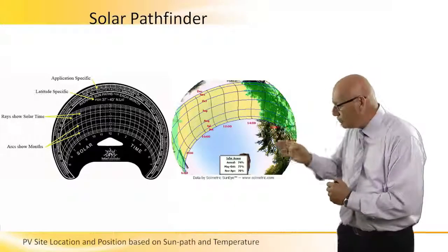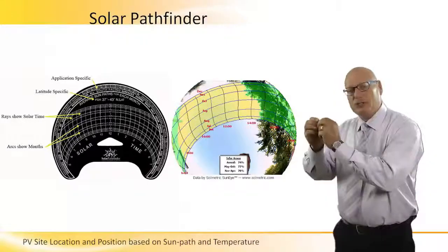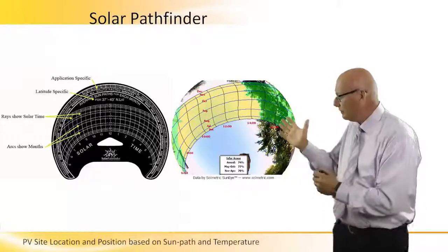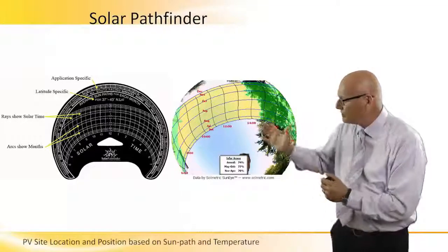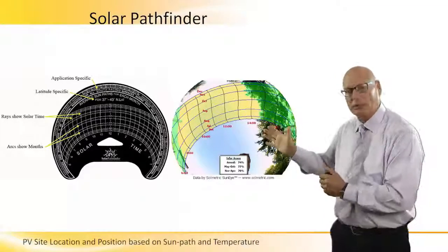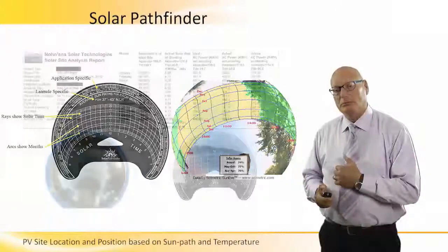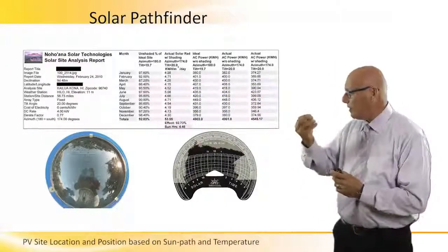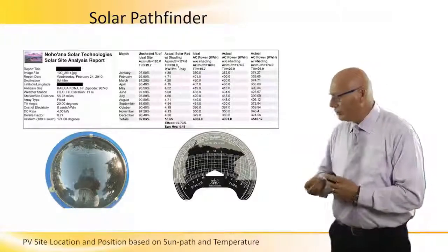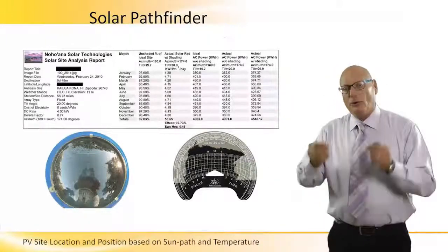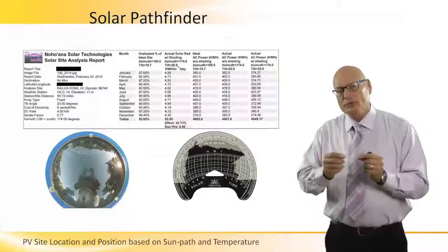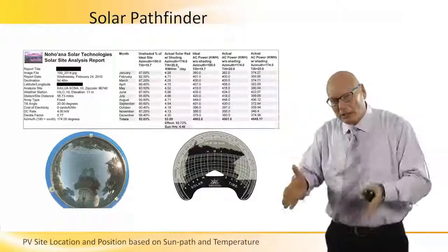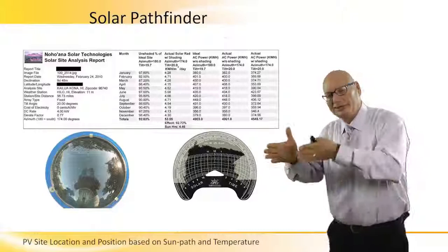We will know which month, which day, and what time of day a shadow will start and when trees will go in and out. So we get a calculated presentation over the year of how much power we lose every single day if we place an array here and not there.